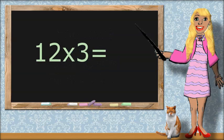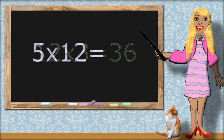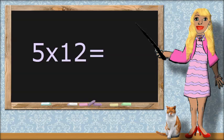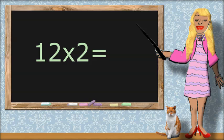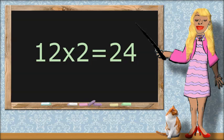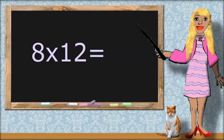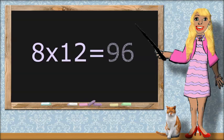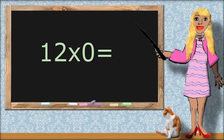12 times 3 equals 36. 5 times 12 equals 60. 12 times 2 equals 24. 8 times 12 equals 96. 12 times 0 equals 0.